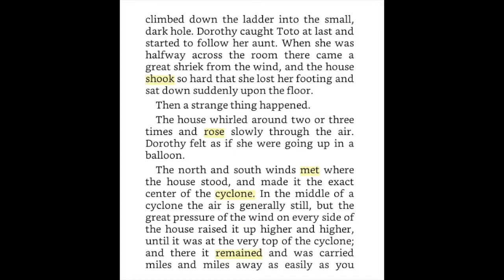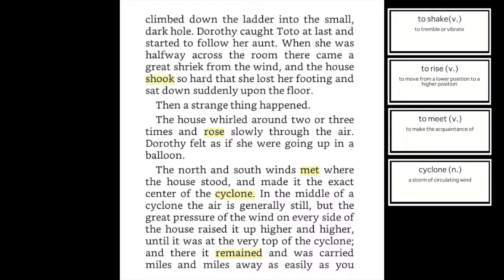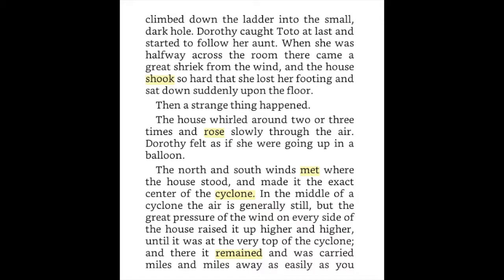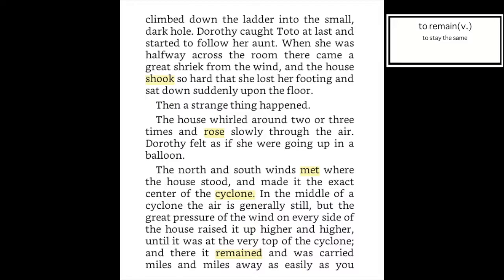Dorothy caught Toto at last and started to follow her aunt. When she was halfway across the room, there came a great shriek from the wind and the house shook so hard that she lost her footing and sat down suddenly upon the floor. Then a strange thing happened — the house whirled around two or three times and rose slowly through the air. Dorothy felt as if she were going up in a balloon. The north and south winds met where the house stood and made it the exact center of the cyclone. In the middle of a cyclone the air is generally still, but the great pressure of the wind on every side of the house raised it up higher and higher until it was at the very top of the cyclone.